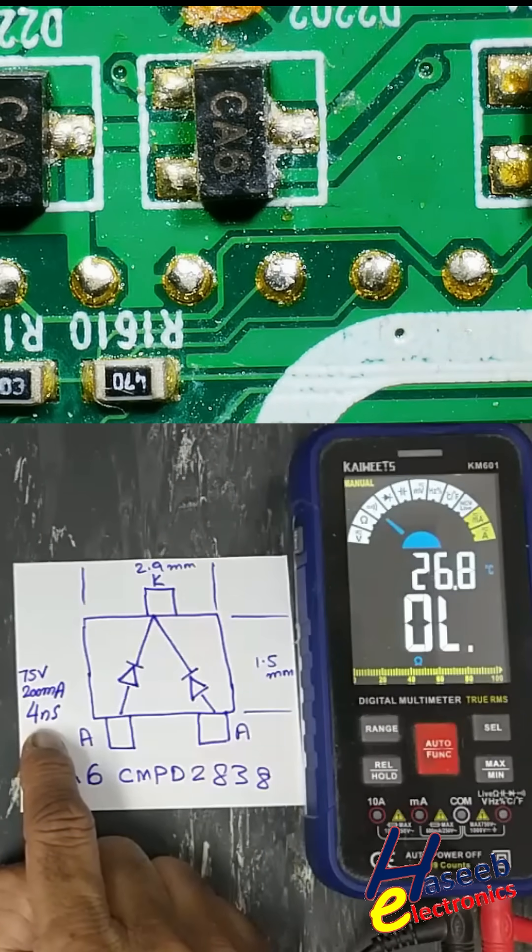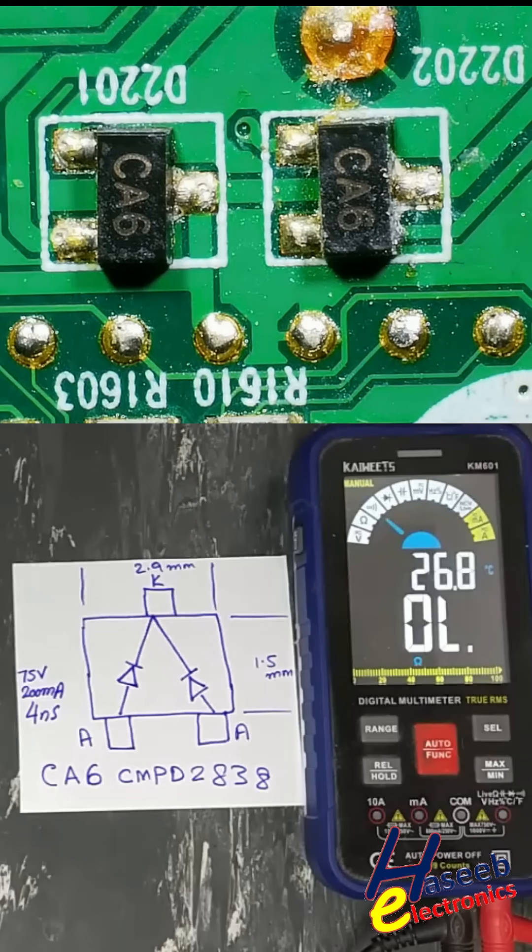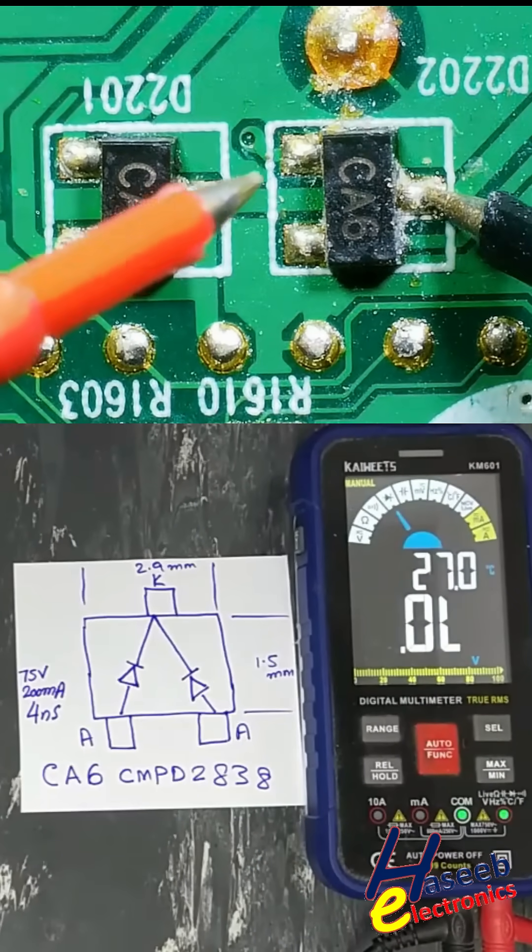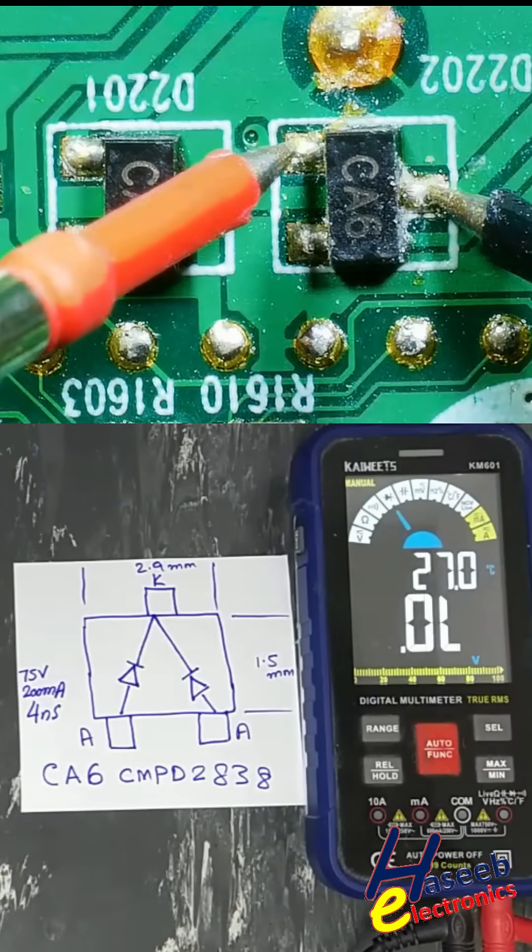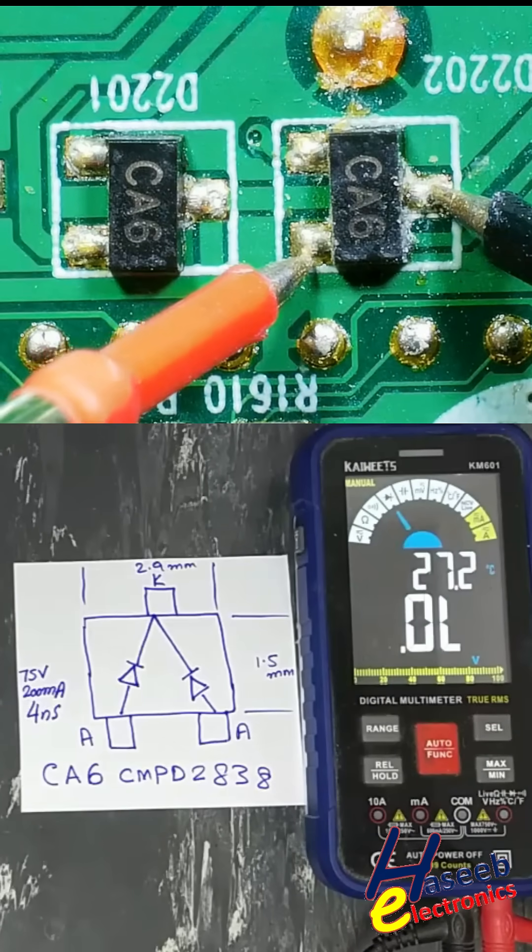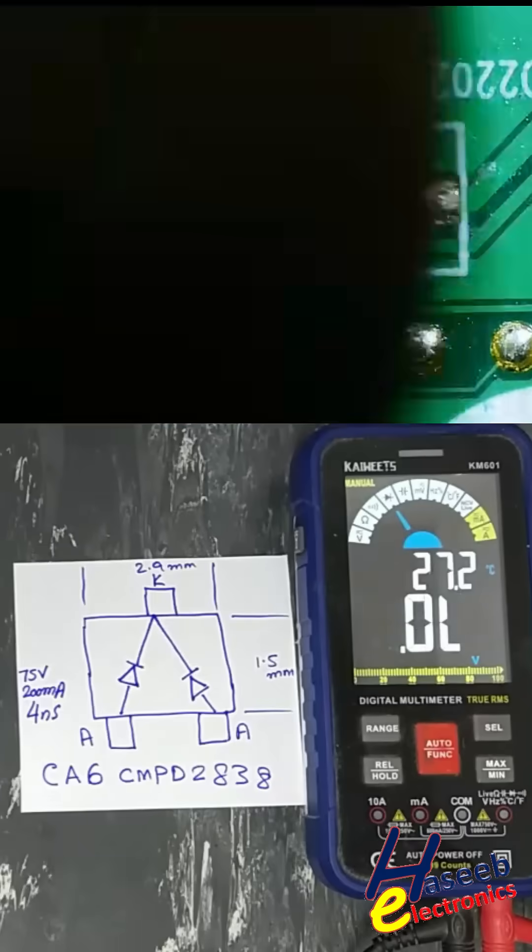It is similar to 1N4148 diode specification. Set multimeter to diode testing, common at cathode pin. Anode 0.647, anode 0.647. Reverse the leads.